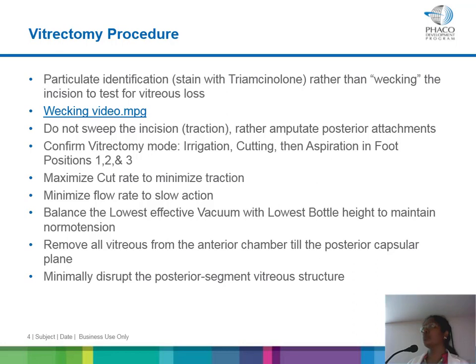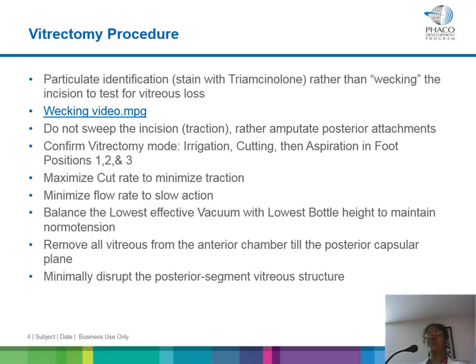Bimanual vitrectomy is always through two side ports; we always prefer to close the main wound. Some surgeons use one phaco wound for the vitrectomy and the other side port for irrigation. For SICS, always make sure the main wound is sealed so the chamber is closed before starting vitrectomy. If it is not a self-sealing main incision, better suture it. Confirm the chamber is closed before proceeding.